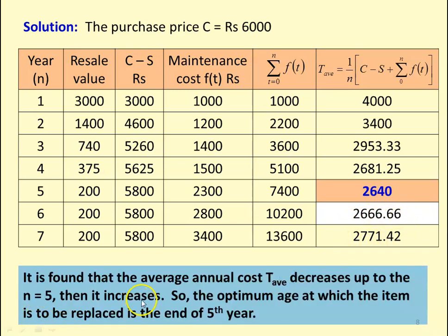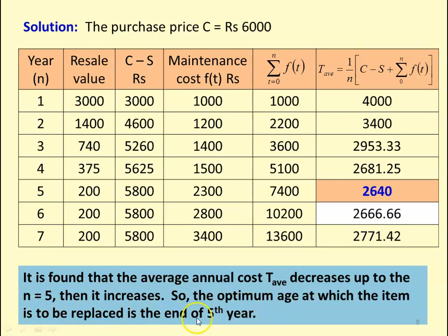It is found that the average annual cost T-average decreases up to the fifth year (n = 5), then increases. So the optimum age at which the item needs to be replaced is the end of the fifth year.